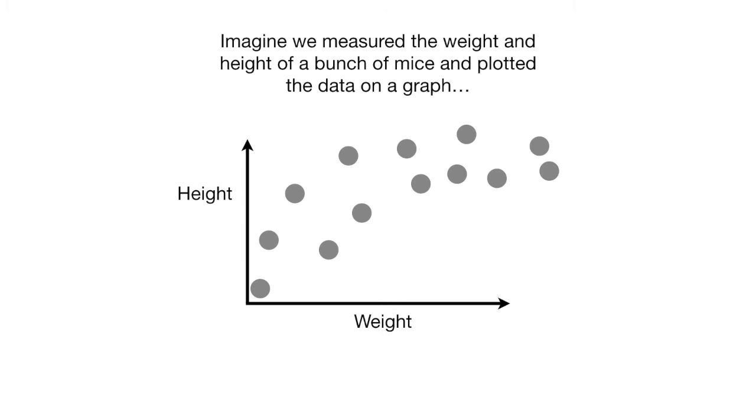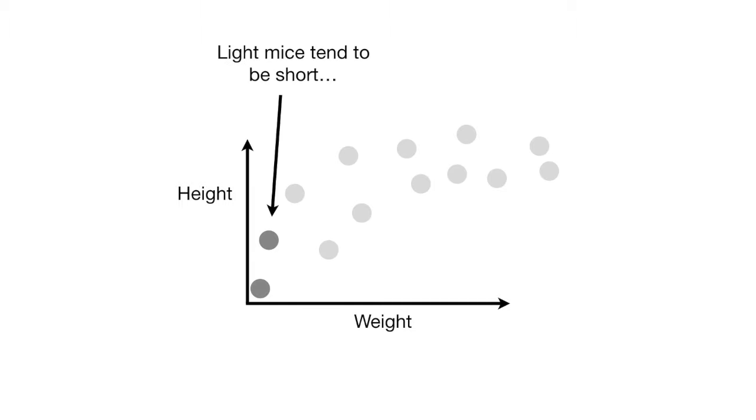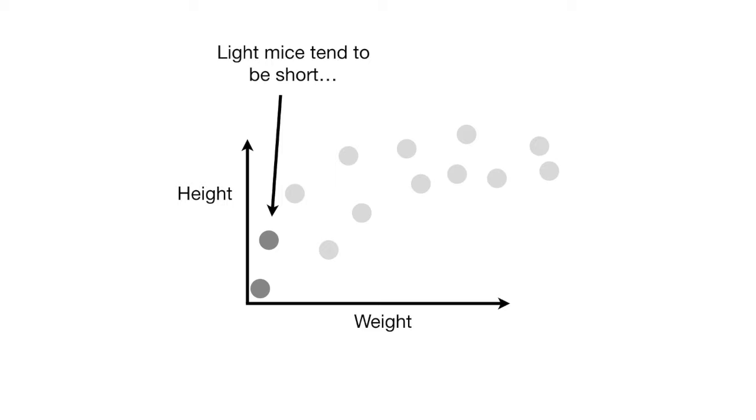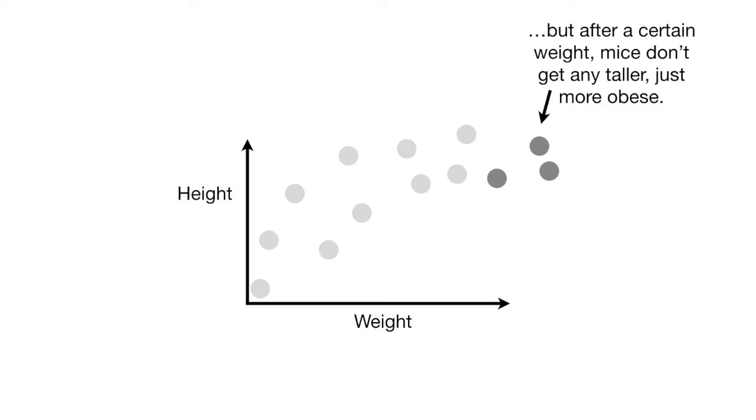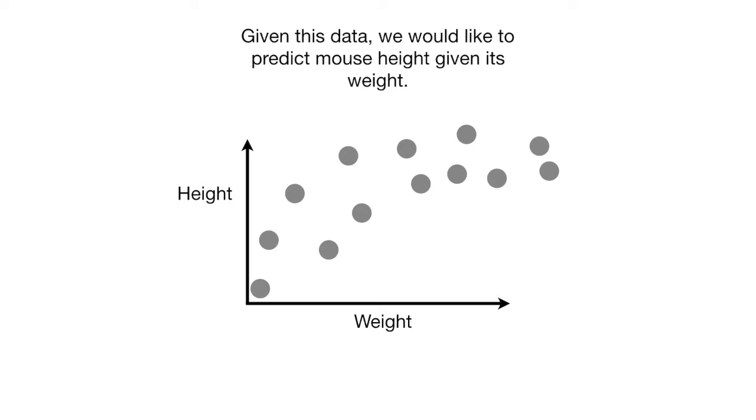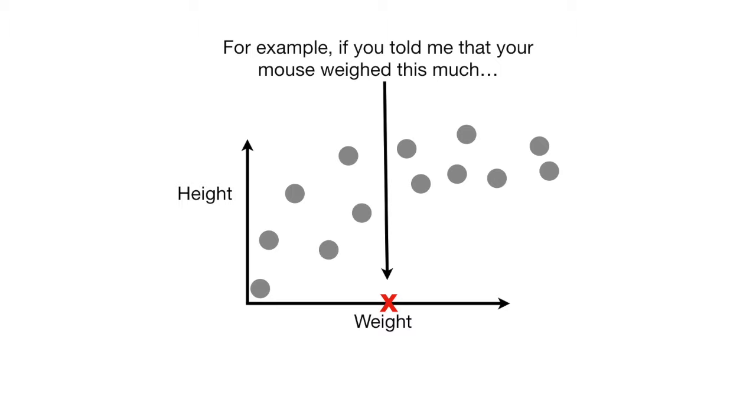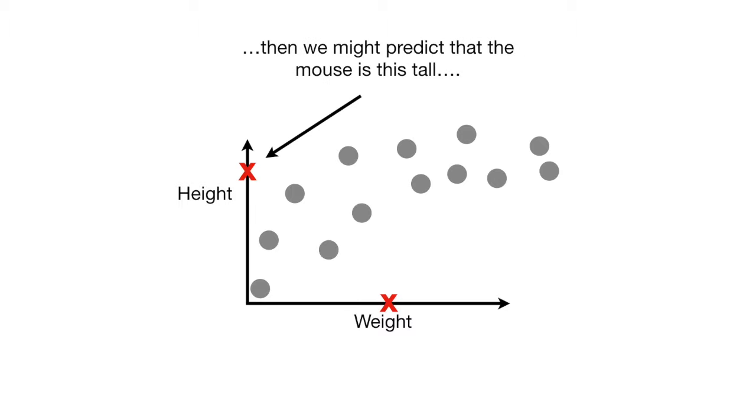Imagine we measured the weight and height of a bunch of mice and plotted the data on a graph. Light mice tend to be short, and heavier mice tend to be taller. But after a certain weight, mice don't get any taller, just more obese. Given this data, we would like to predict mouse height given its weight. For example, if you told me your mouse weighed this much, then we might predict that the mouse is this tall.